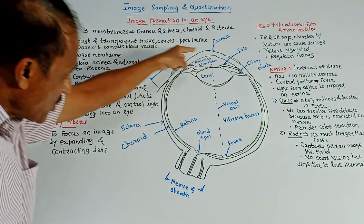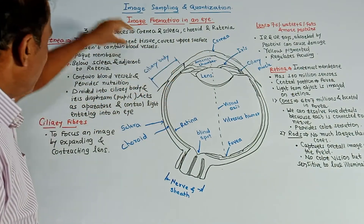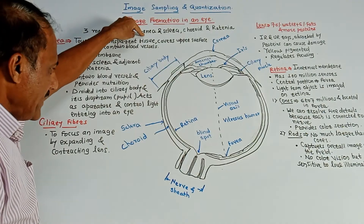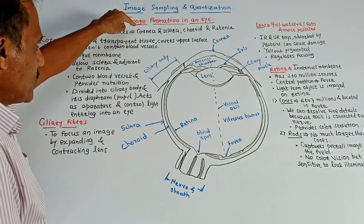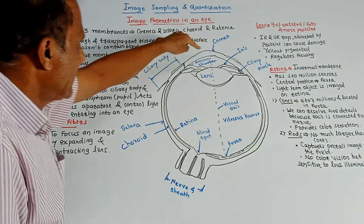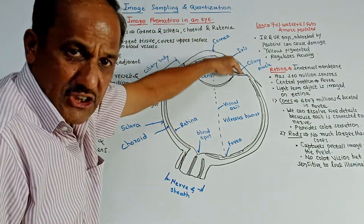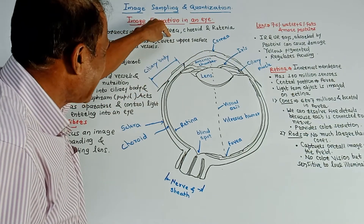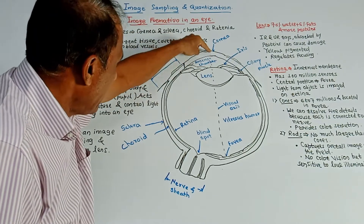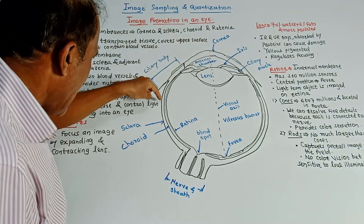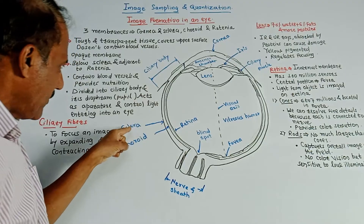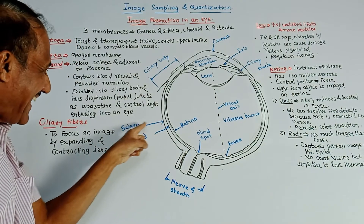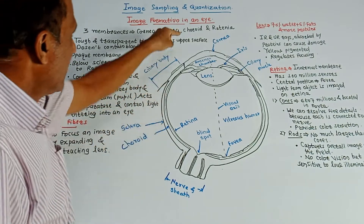As shown in this diagram, there are three membranes. One is cornea, shown as the external part. In continuation with the cornea at the lower side, we have the membrane which is sclera.